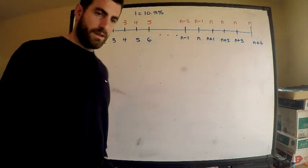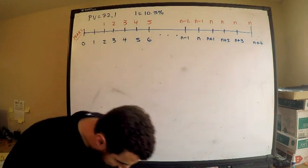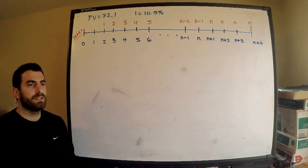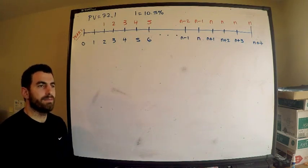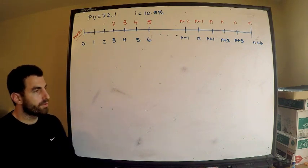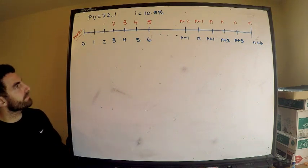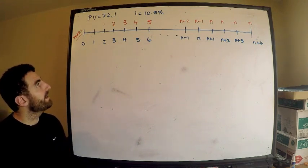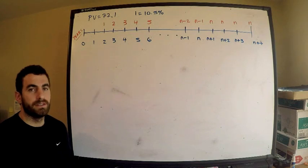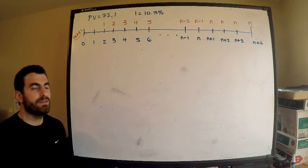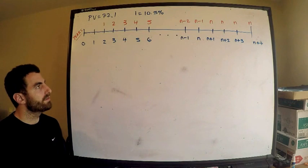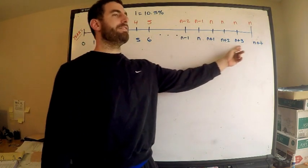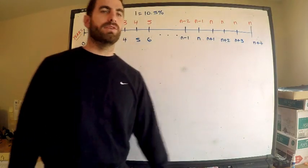Another Exam FM video — kind of an interesting question, and this is more or less where I'm at in my studies. Read the question at the beginning, but this is the setup. This is the time diagram. We're given a perpetuity with increasing payments until time n plus one, and then we have a level perpetuity after that.